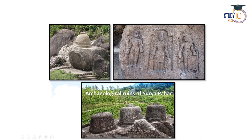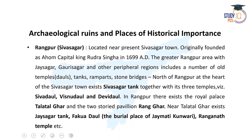Khujapaha is a very important archaeological site because remains belonging to different faiths — Hinduism, Jainism, and Buddhism — are all found at a common place, and can be dated back to the 8th to 9th century, that is the ancient period of Assam. The next place of historical importance is Rangpur, the Ahom capital, located near the present Sibsagar town. Rangpur was founded by Rudra Singha in the year 1699. Rudra Singha was the son of Joymoti and Gadadhar Singha. The greater Rangpur area includes Joysagar, Gorisagar, and other peripheral regions.